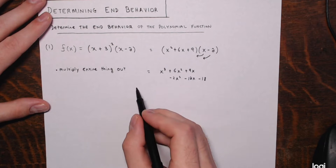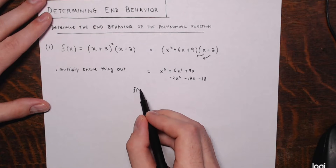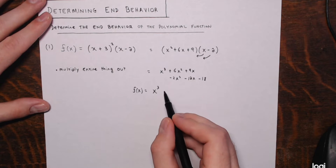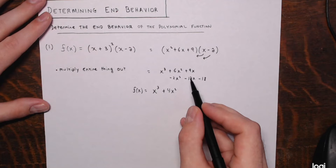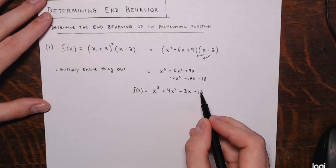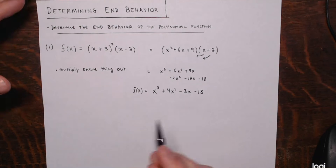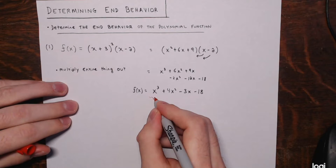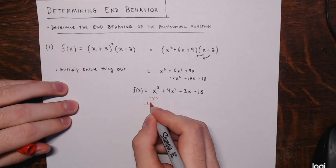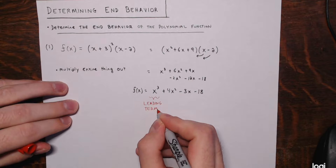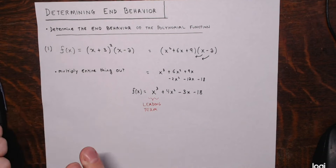Combining like terms, we get f(x) = x³ + 4x² − 3x − 18. And now we've found the leading term. The leading term — the highest powered term — is 1x³.